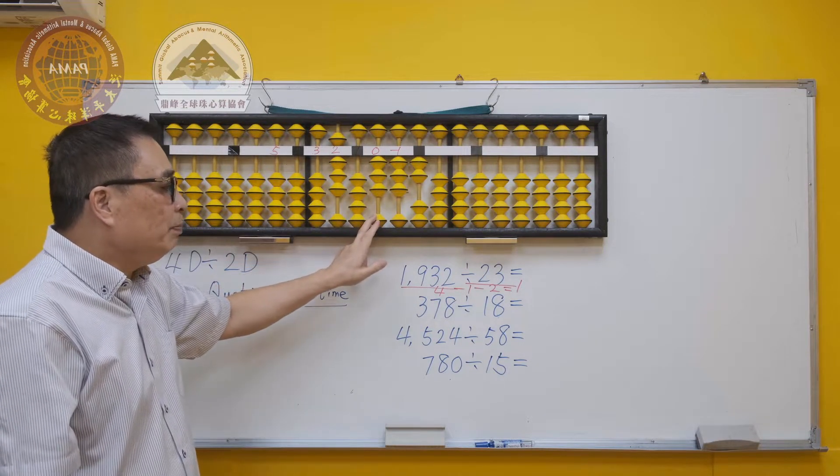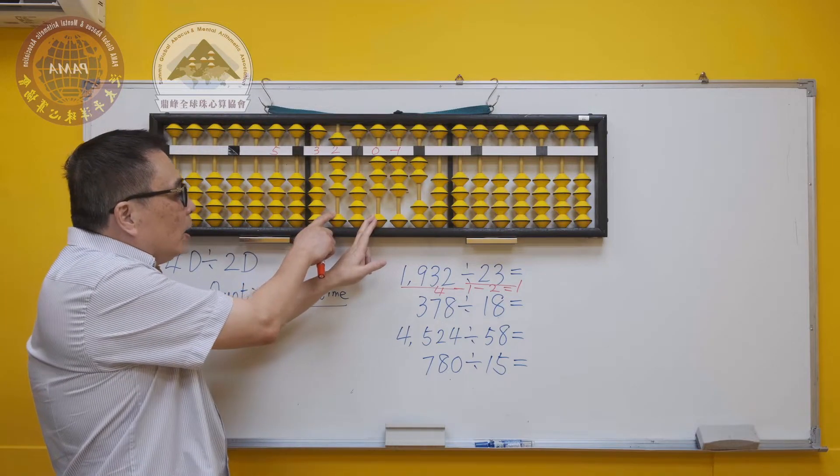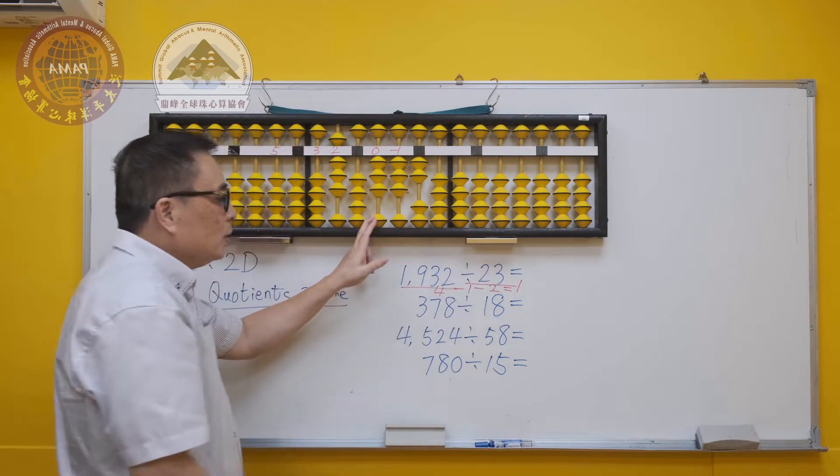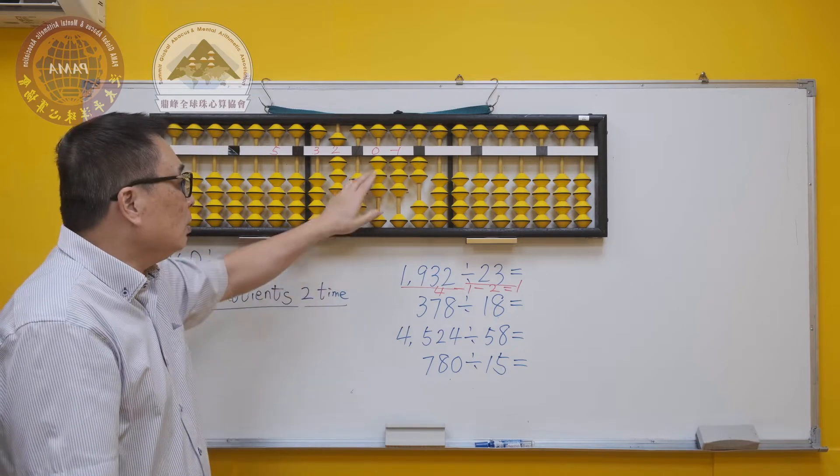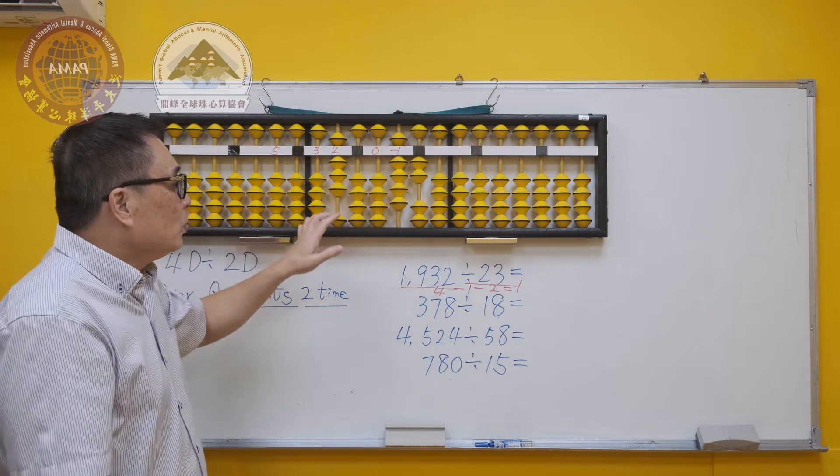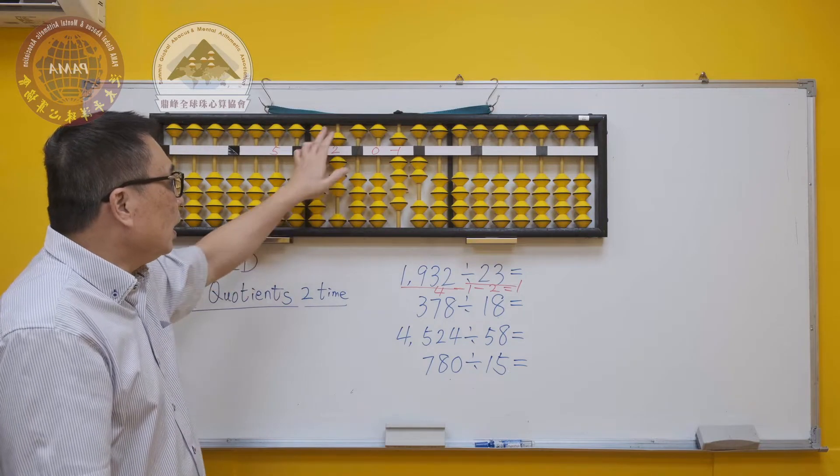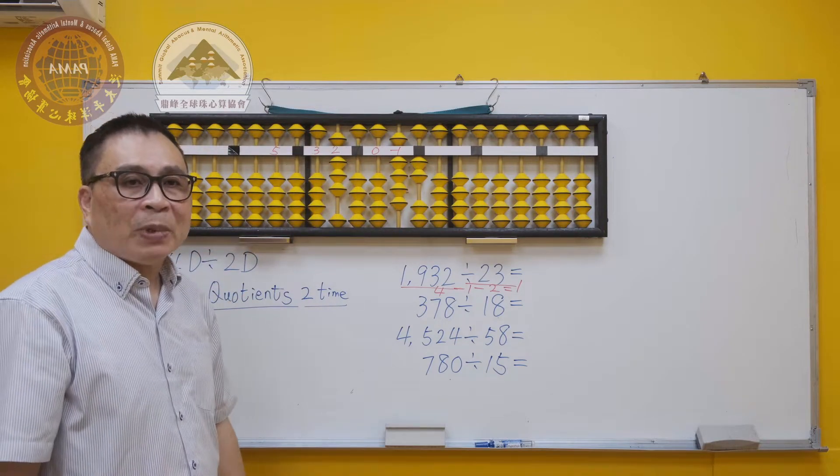Next, we will use the new answer 8 to times 3, which gives us 24. Now we can minus 24. Therefore, the correct quotient of the first digit is 8.